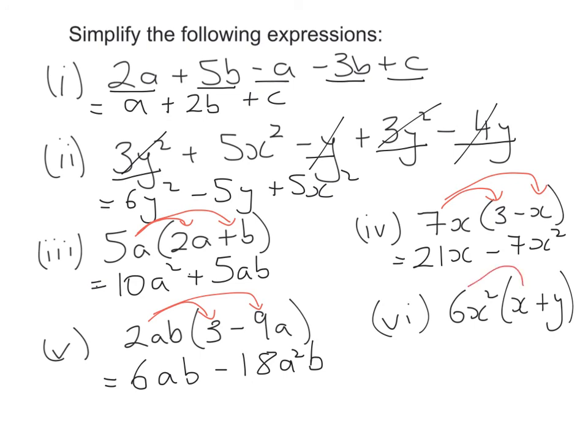And one more to go. 6x squared multiplied by x squared — that's going to give me 6x cubed. That goes back to your rules of indices: you've got x with the power of 1 multiplied by x with the power of 2, and you add the powers. That's where the x cubed comes from. Then 6x squared times y gives me plus 6x squared y.